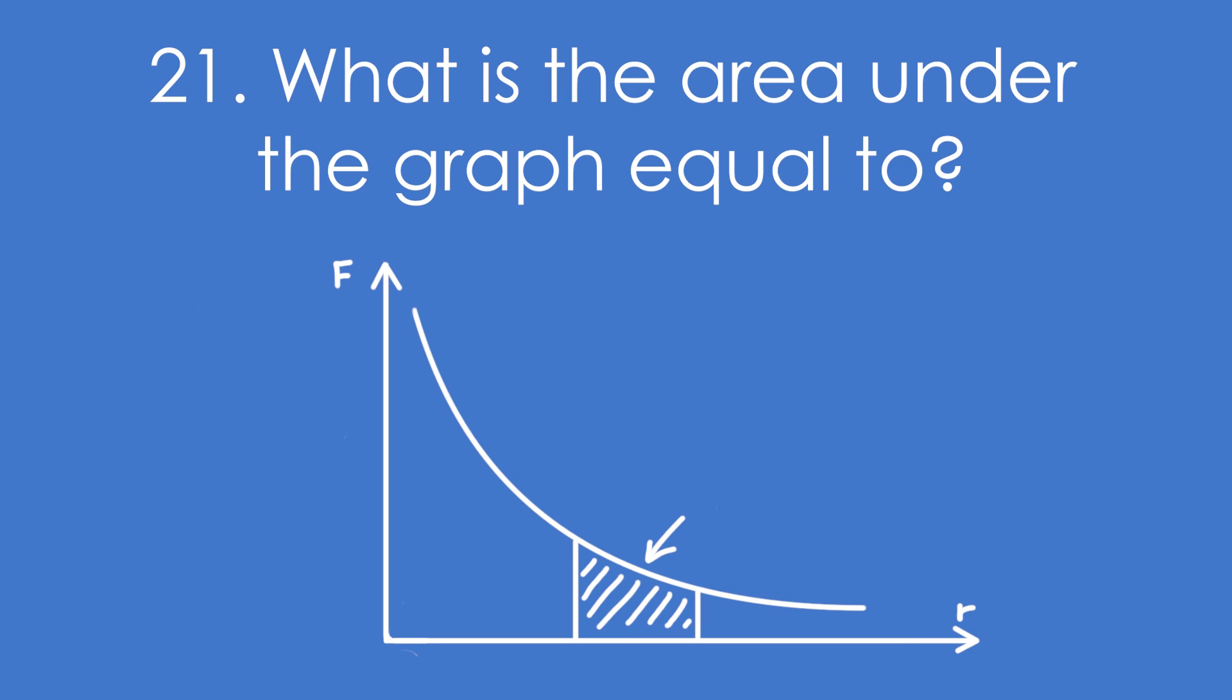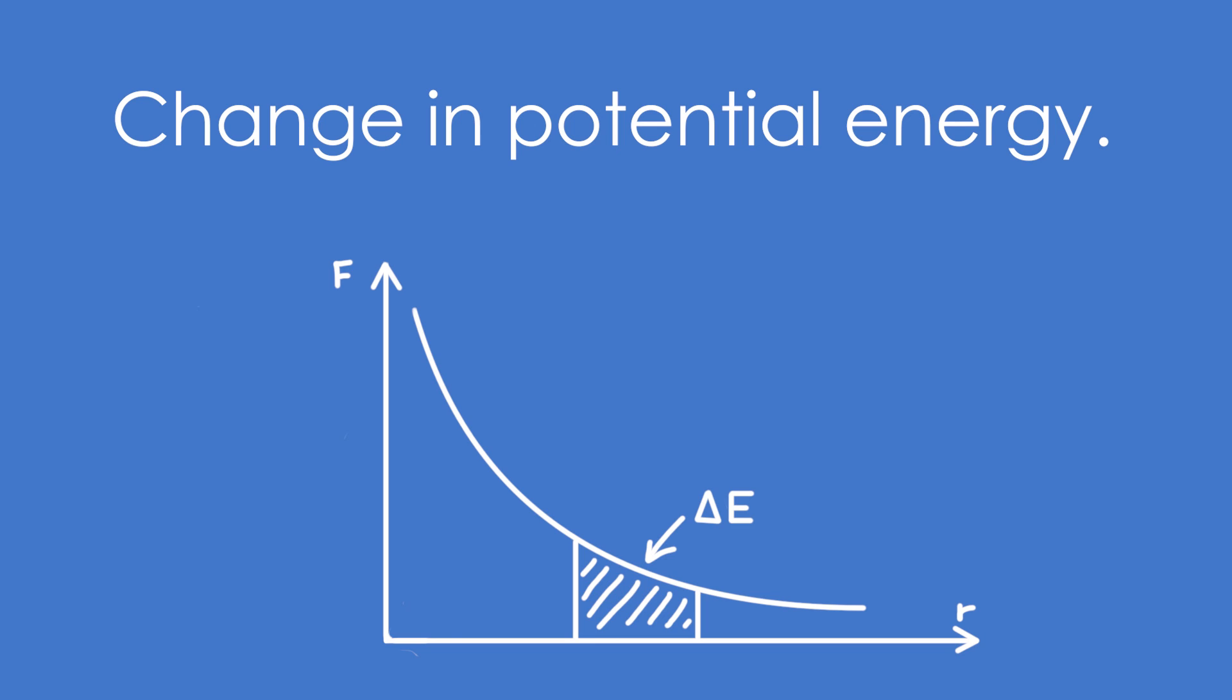Twenty-one, what is the area under this graph of force against distance equal to? Well, it's area, so it's force times distance, so it's going to be work done. Therefore, it's change in potential energy.